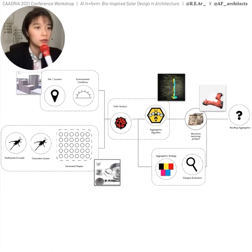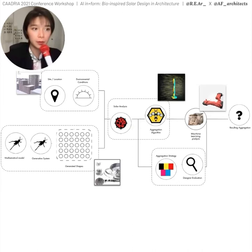Before that, we must understand what kind of aggregation we're aiming at. If we have just one form, how do we scale it up to city scale? Most importantly, how can we translate the aggregation into an actual algorithm that we have some design control over, and how can we partner with the algorithm to optimize these forms?